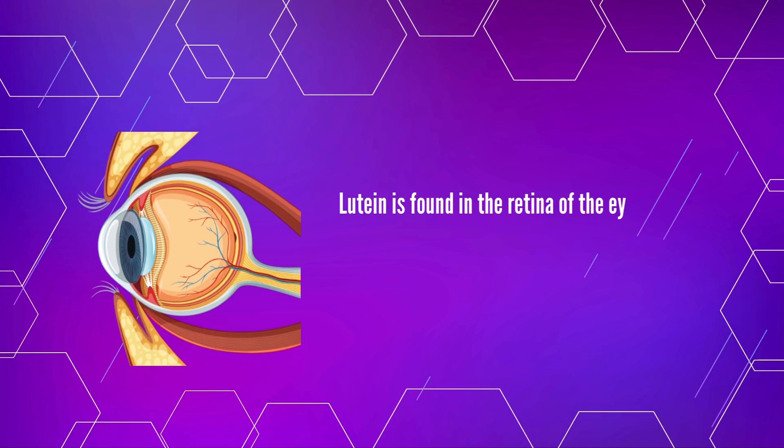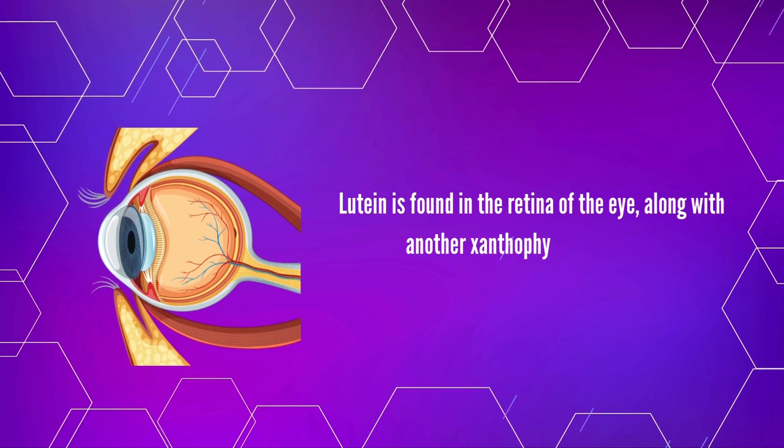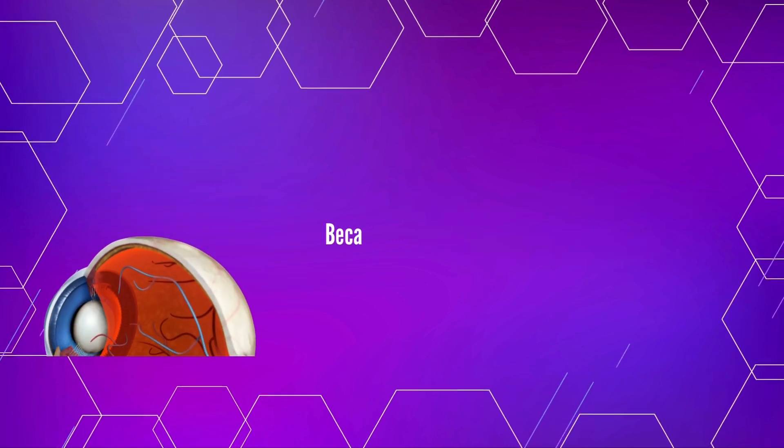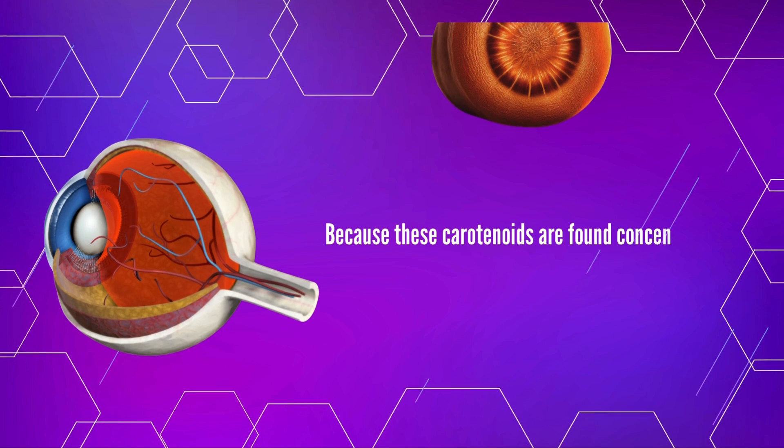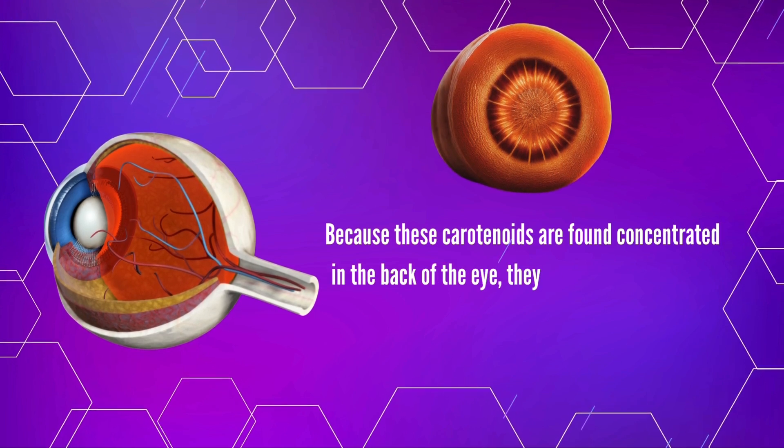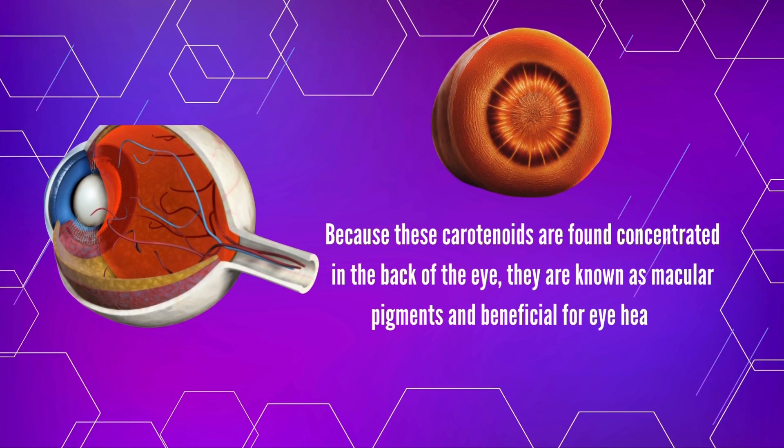Lutein is found in the retina of the eye, along with another xanthophyll, zeaxanthin. Because these carotenoids are found concentrated in the back of the eye, they are known as macular pigments and beneficial for eye health.